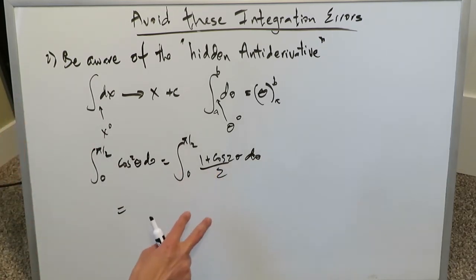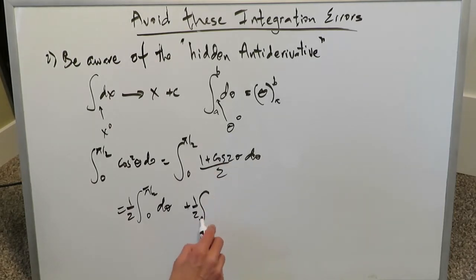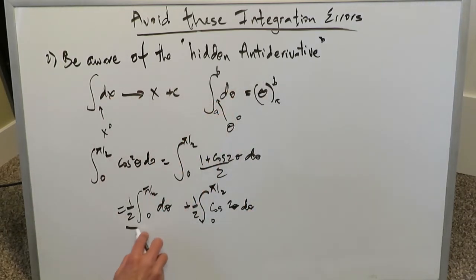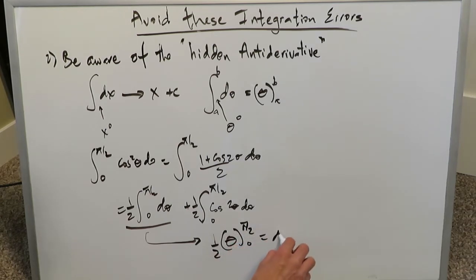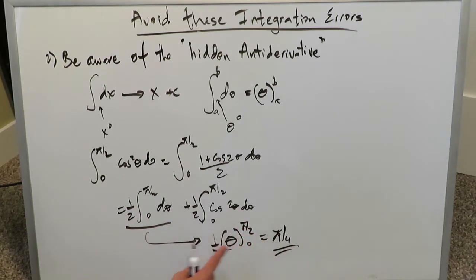A good example is ∫₀^(π/2) cos²θ dθ. Using the power-reducing identity or half-angle formula, you write it as ∫(1 + cos2θ)/2 dθ. Opening this up — remembering to separate properly with coefficients and not forget the hidden antiderivative — you split into ∫₀^(π/2) (1/2) dθ plus ∫₀^(π/2) (1/2)cos2θ dθ. Focusing on the first part, the hidden antiderivative θ to the power of 0 yields θ evaluated from 0 to π/2, giving π/4 — but only if you don't miss that hidden antiderivative.